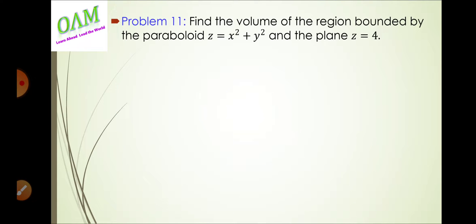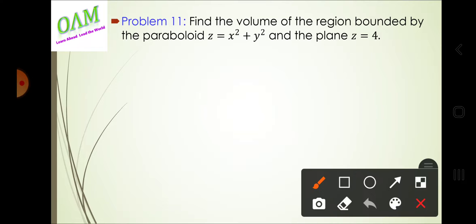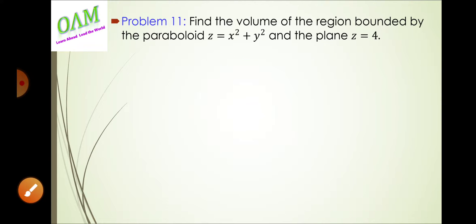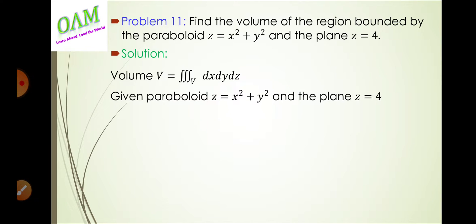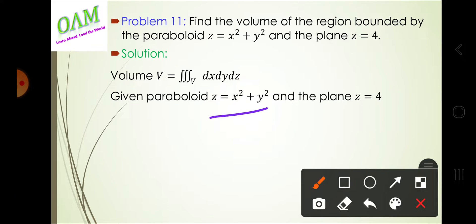In this video, I will use the triple integral to find the volume of the region bounded by the paraboloid z = x² + y² and the plane z = 4.